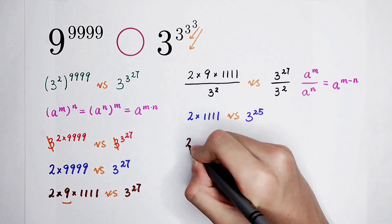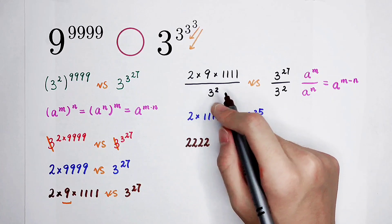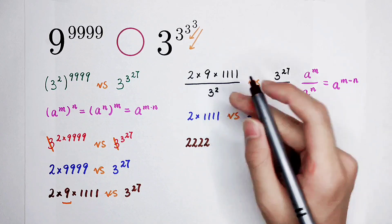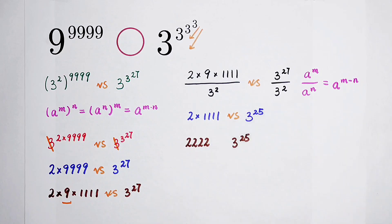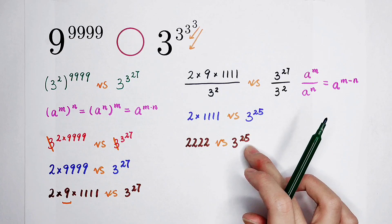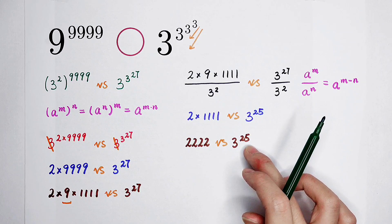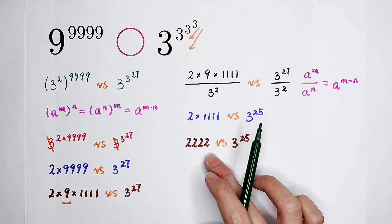Of course, the left hand side is 2222 and the right hand side, 3 to the power of 25. Just compare the value of these two numbers. Okay, we all know that 3 to the power of 25 is much bigger than 2222, but we have to prove. How should we prove it?